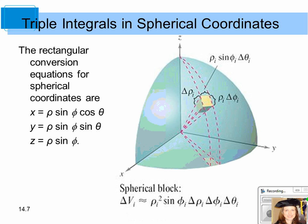In this part of section 14.7, we're looking at triple integrals in spherical coordinates. Back in chapter 11, we were first introduced to spherical coordinates, and points in space using spherical coordinates are in the form of rho, theta, and phi, where rho is the distance from the origin, theta is the angle from the x-axis in the direction of the positive y-axis, and phi is the angle from the positive z-axis out to the point.